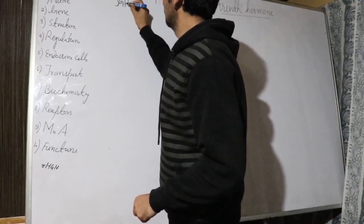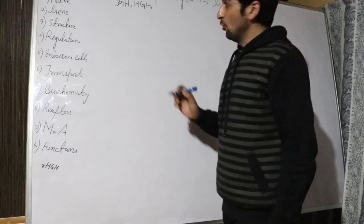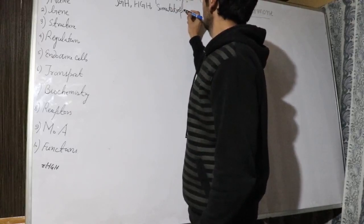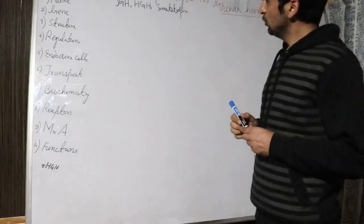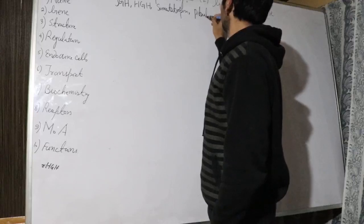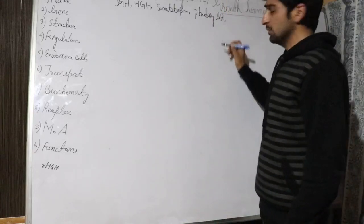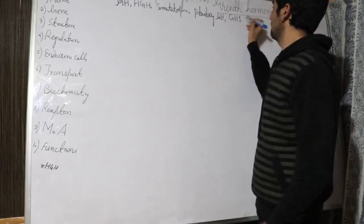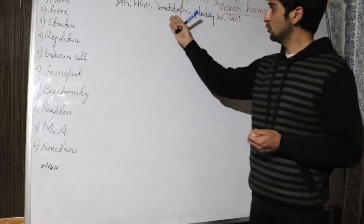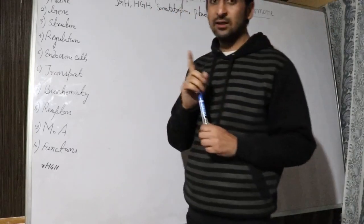Growth hormone is also known as the human growth hormone. We are studying human physiology. And this is called somatotropin, or pituitary growth hormone, or growth hormone 1. These are the names of the growth hormone.